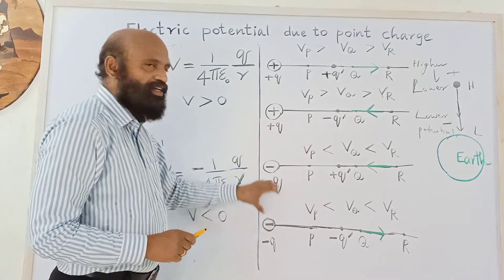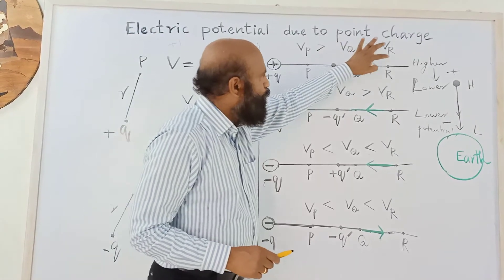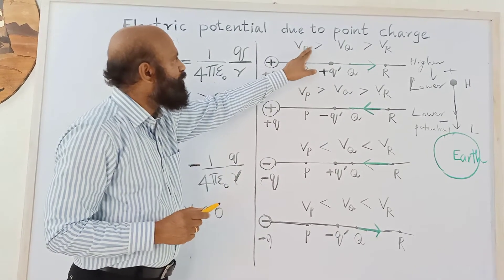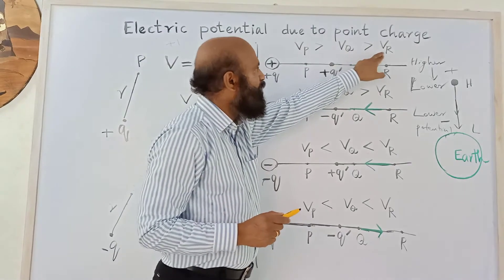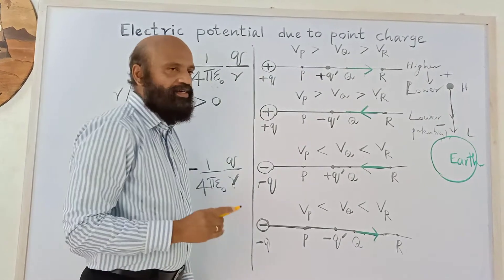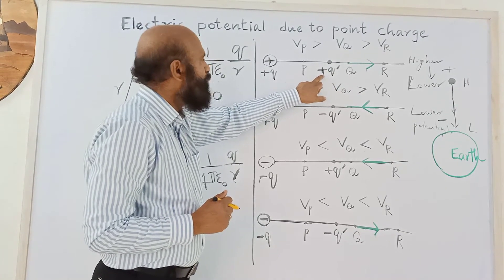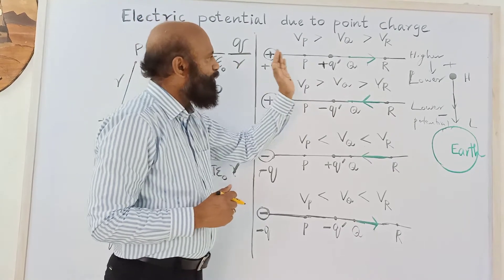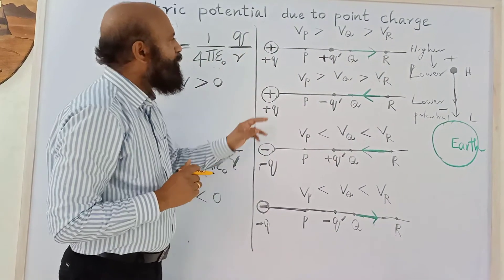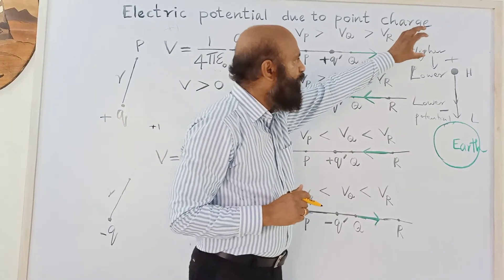Consider a positive source charge with three points P, Q, and R. For a positive charge, nearer points are at a higher potential, so Vp > Vq > Vr. Now place a positive test charge near this source. There will be repulsion, so the test charge moves away from the source — from a higher potential to a lower potential. So a positive test charge moves from higher to lower potential.